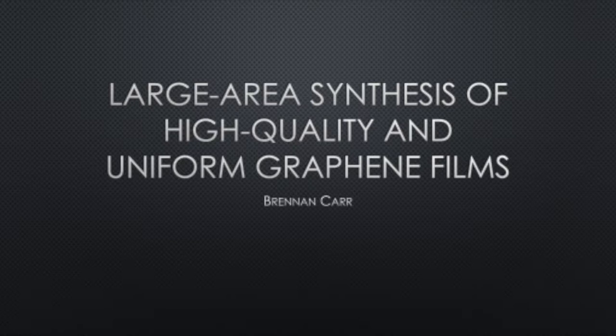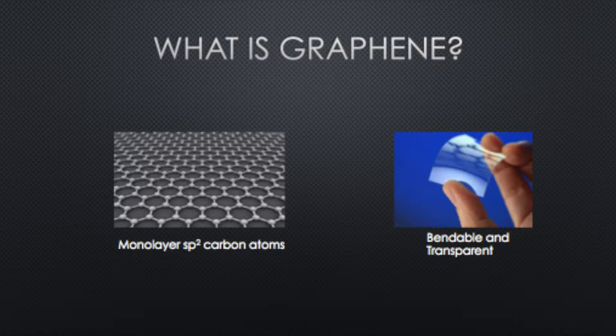In this presentation we're going to talk about the large area synthesis of high quality and uniform graphene films. Graphene is a monolayer of sp2 carbon atoms. Think of graphite — you have sheets of carbon atoms stacked on top of one another with van der Waals forces in between them. Graphene is just one of those single layers without the other layers present.